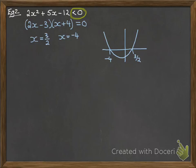Now our inequality says we're looking for anywhere that it's less than zero, so anywhere that it dips below the x-axis. So it's that portion just there between minus 4 and 3 over 2.